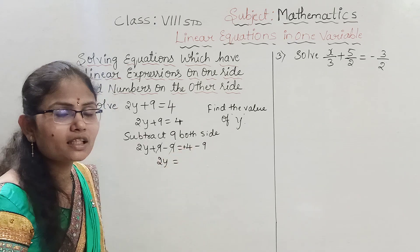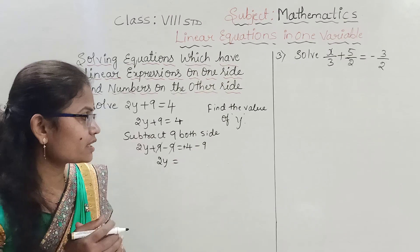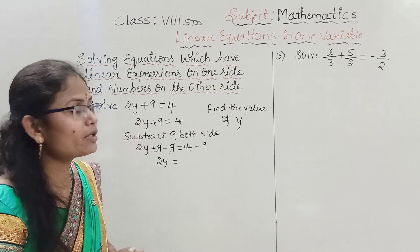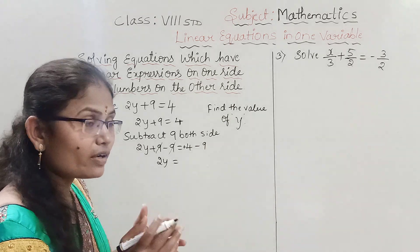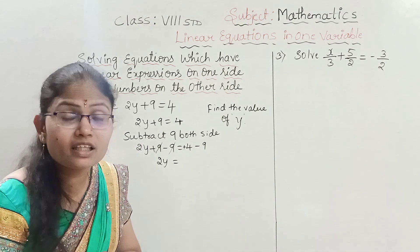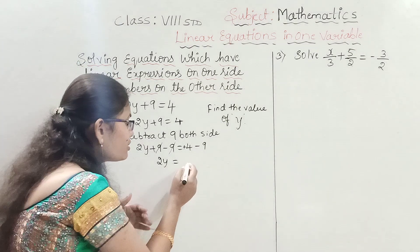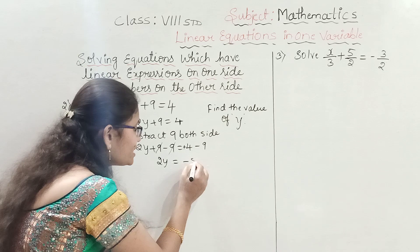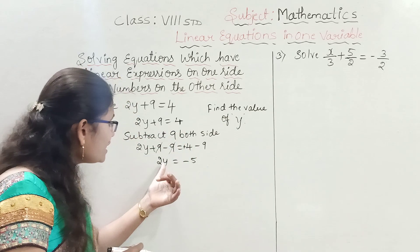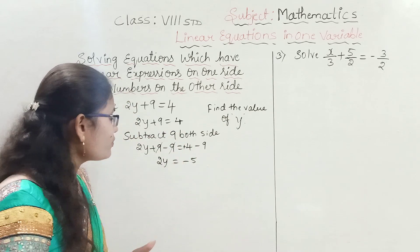On the RHS: 4 has a positive sign, so plus 4 minus 9 — we subtract. Since 9 is the greater number, the result is minus 5. So 2y equals minus 5.